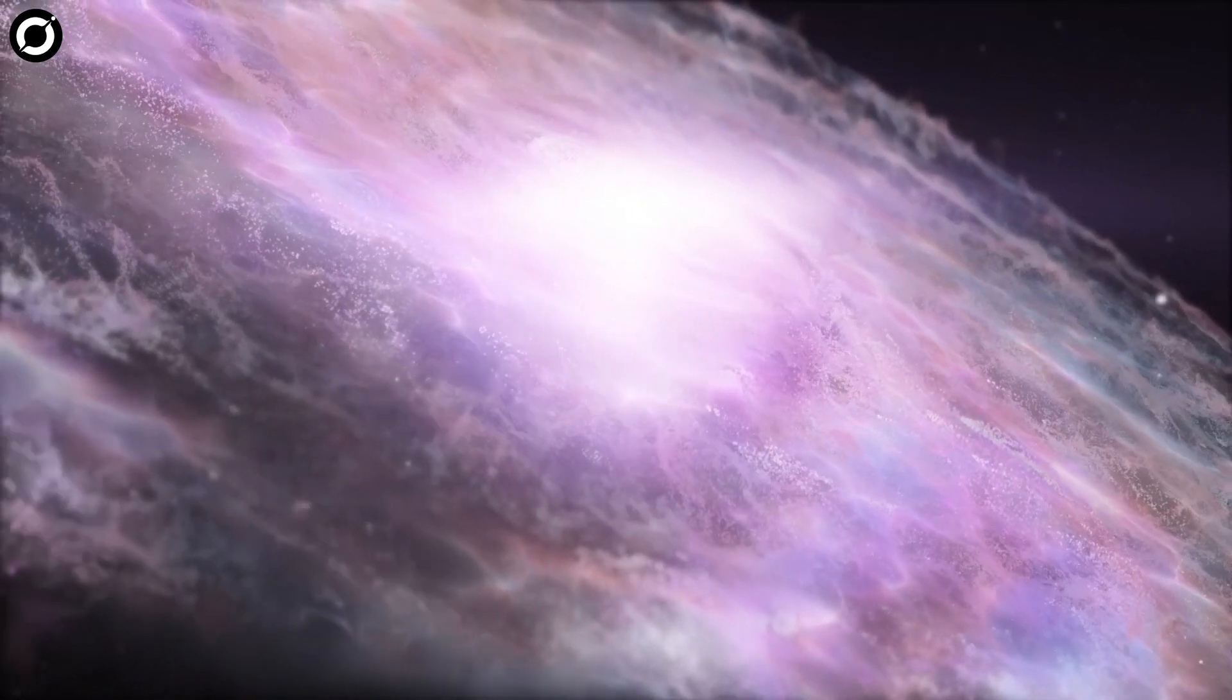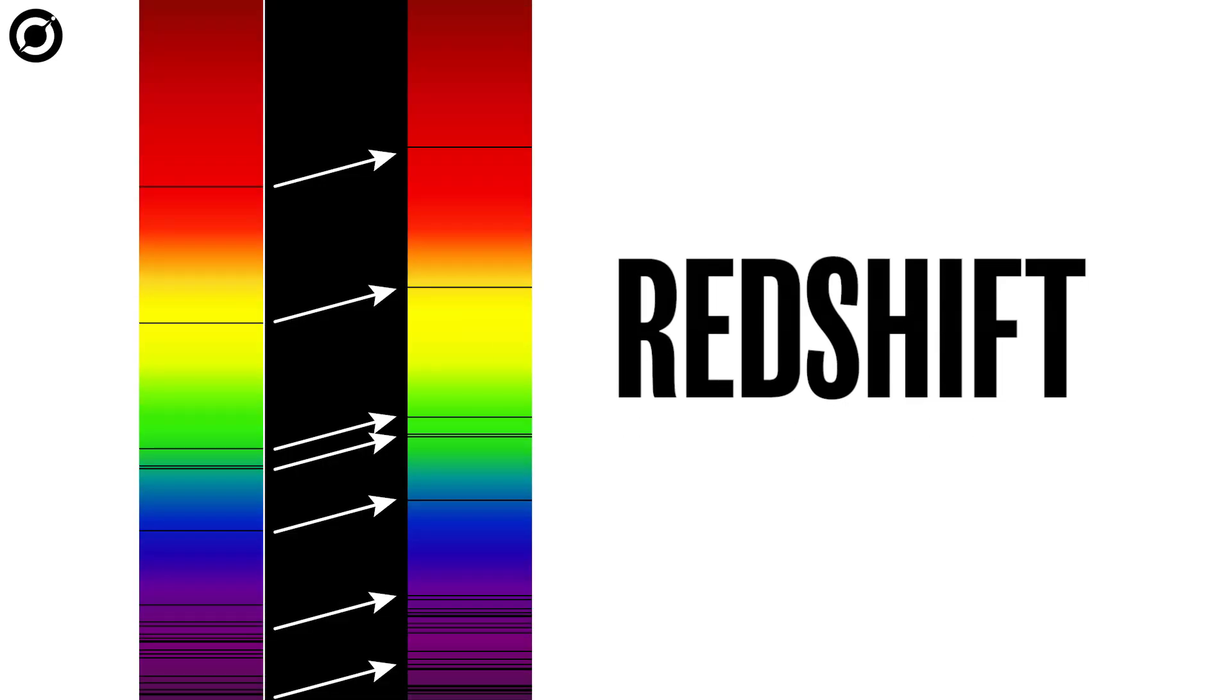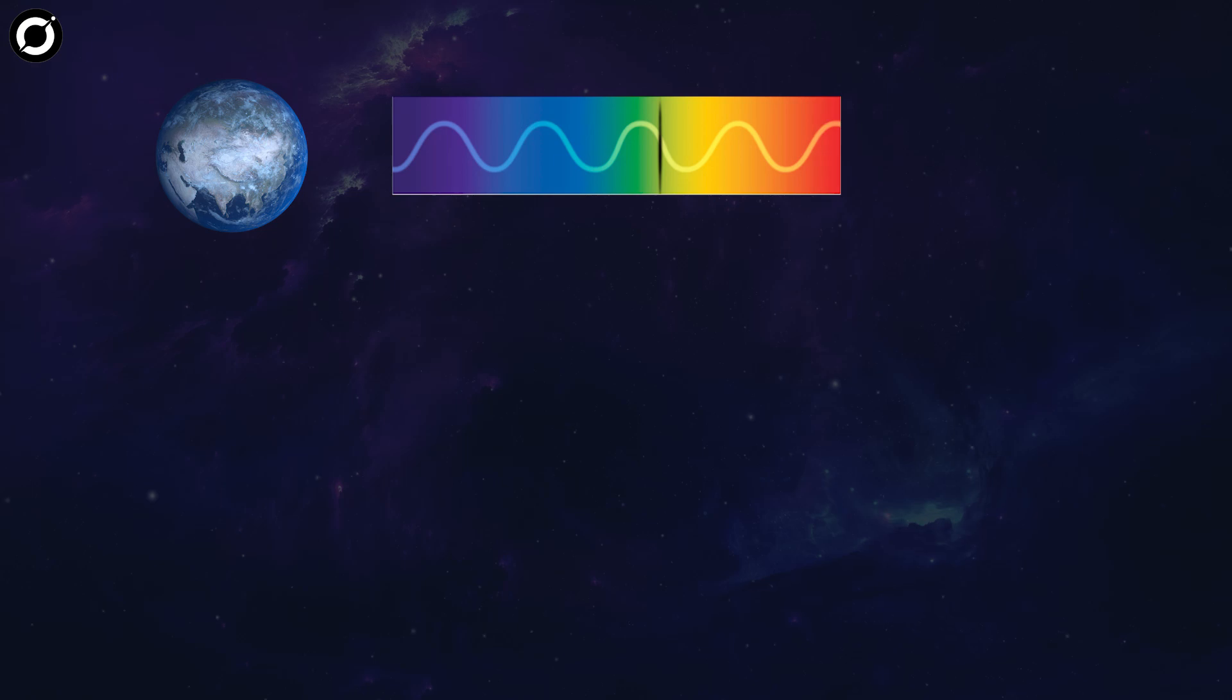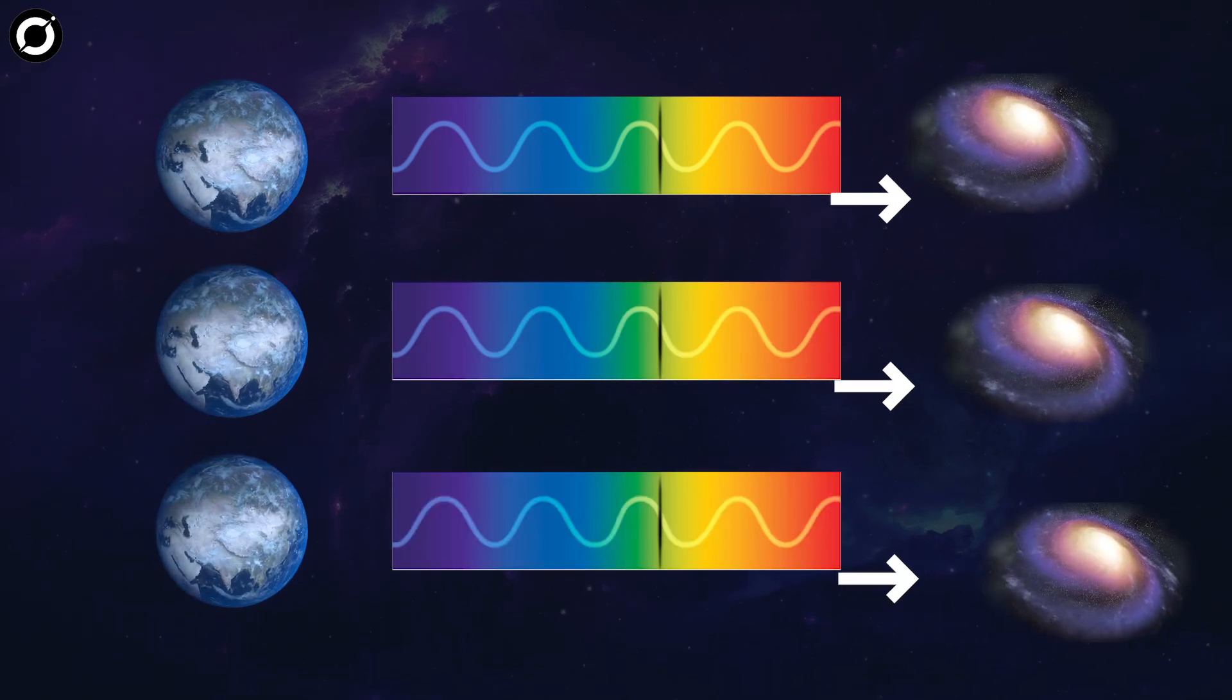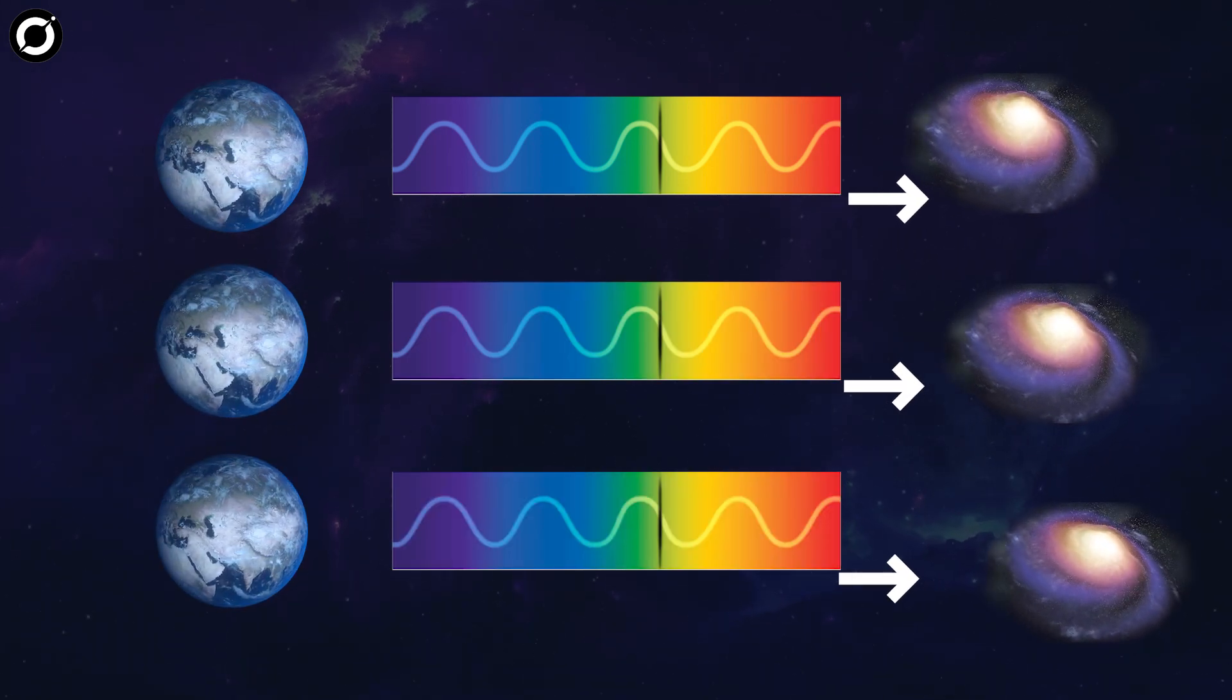That's why galaxies and stars are moving away from each other, which scientists observe through what's called redshift, a shift in the light coming from far away objects that tells us they are moving away from us.